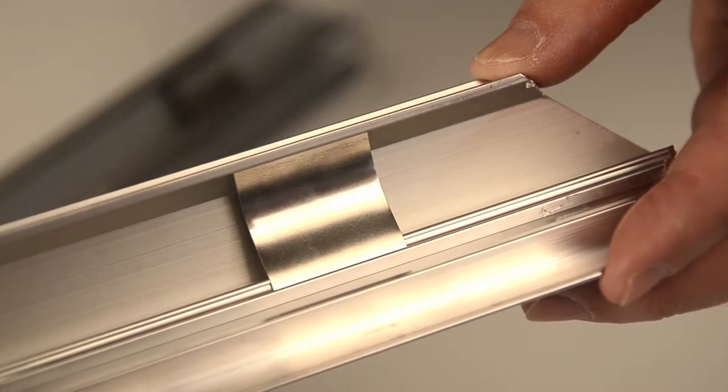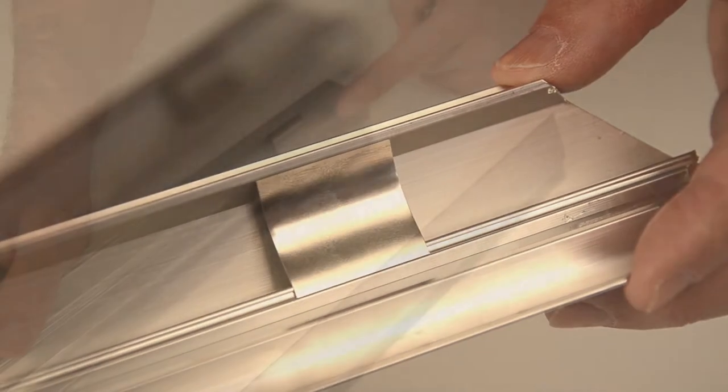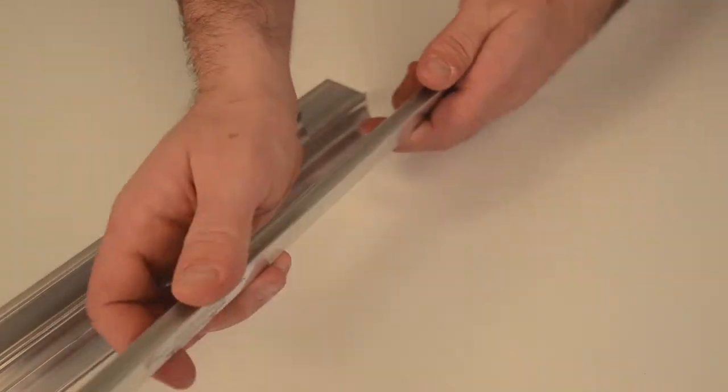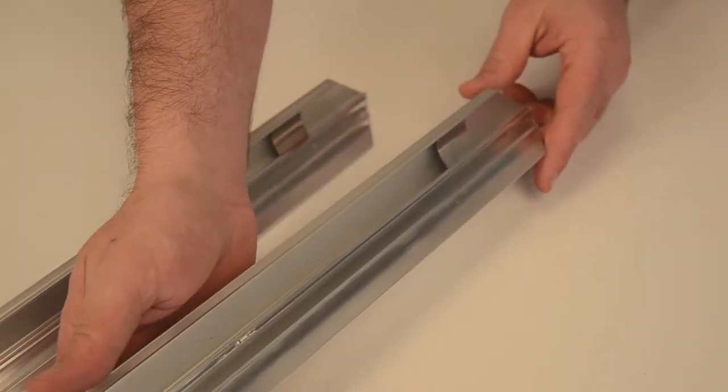When the snap rails are open, you notice they come pre-connected with steel springs. This allows the frame to easily snap open and snap shut, securing your printed graphics in place.